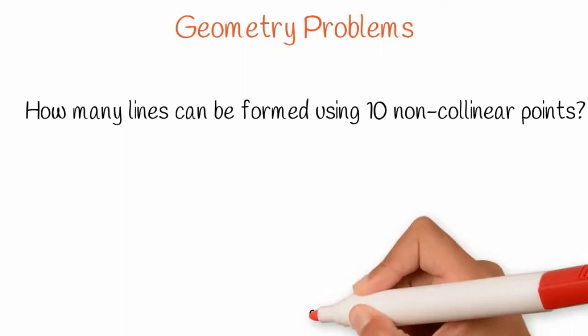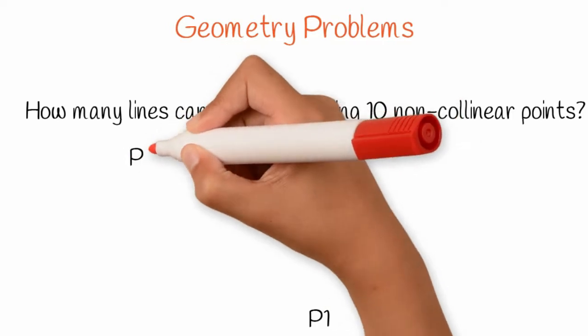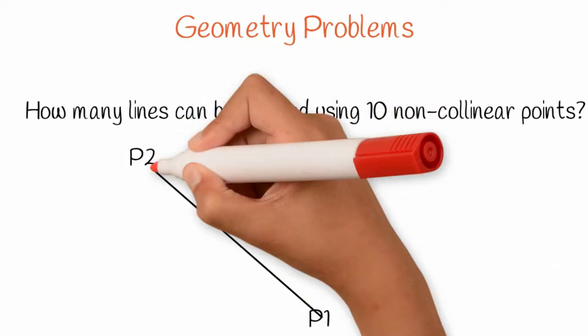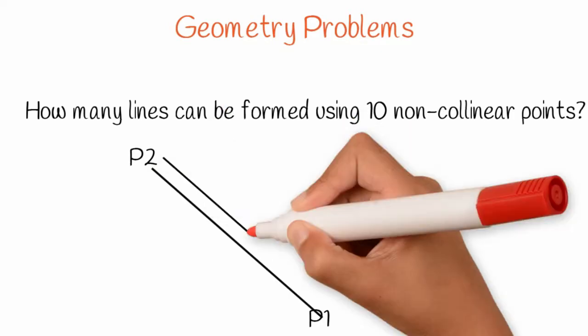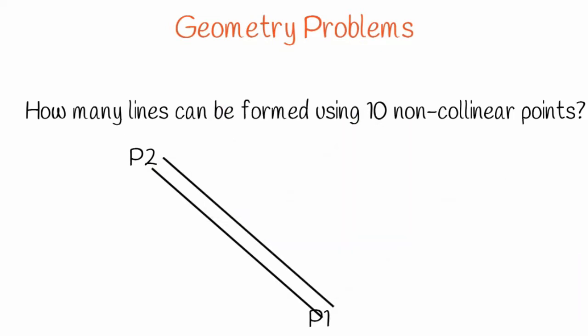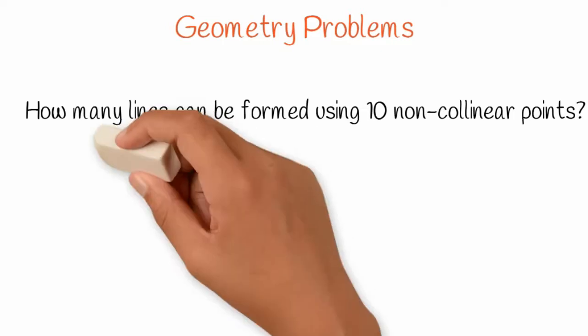Forming a line takes two points. Drawing a line from point 1 to point 2 is same as drawing from point 2 to point 1. So order does not matter here. Hence we are applying the combinations formula to solve this problem.